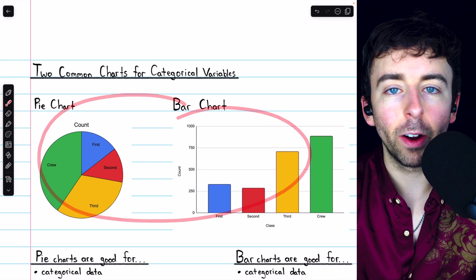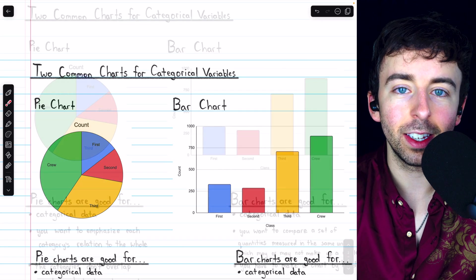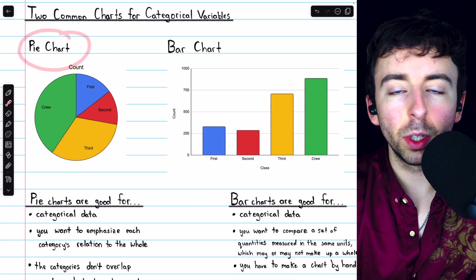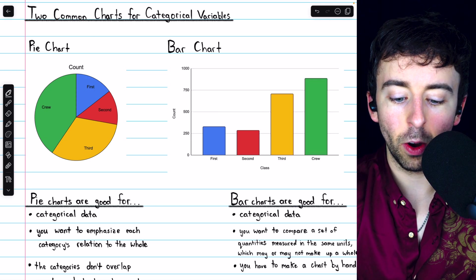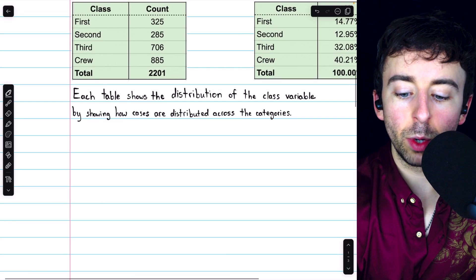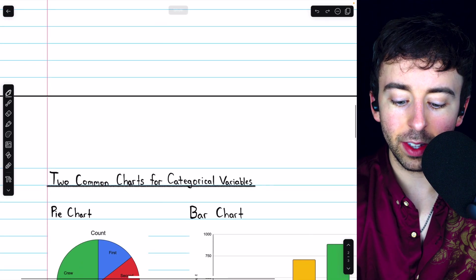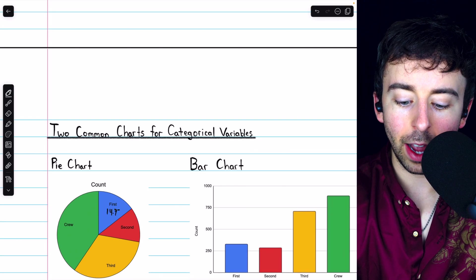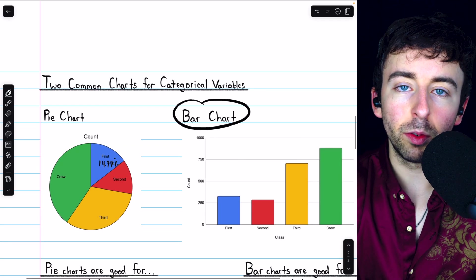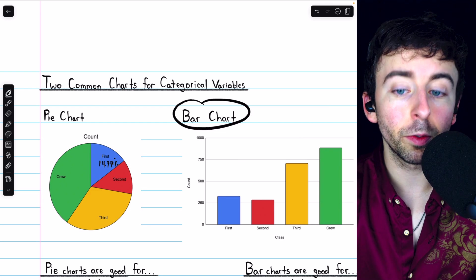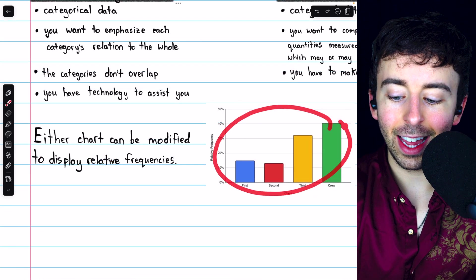We could modify either of these charts to display relative frequencies instead of those raw frequencies. In the case of a pie chart, that's only going to make a difference if we're writing the numbers in the slice. So instead of writing 325 people in first class, I could write 14.77% in that slice if I wanted my pie chart to display relative frequencies.